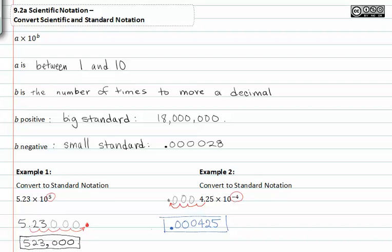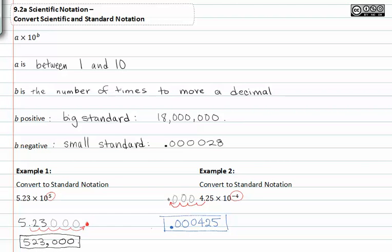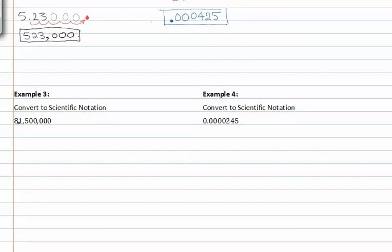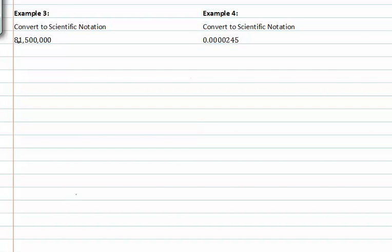Let's go from standard notation to scientific notation in example three and four. So we currently have 81,500,000 and we need to convert it to scientific notation.